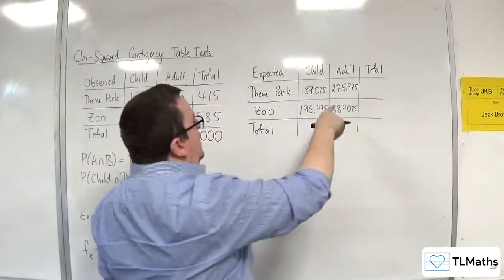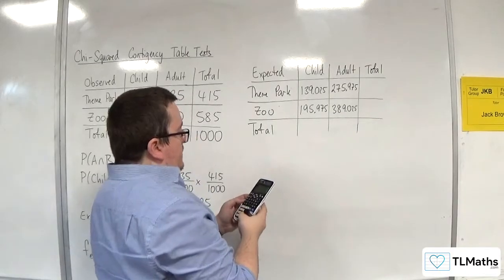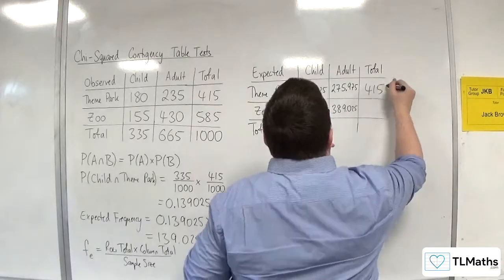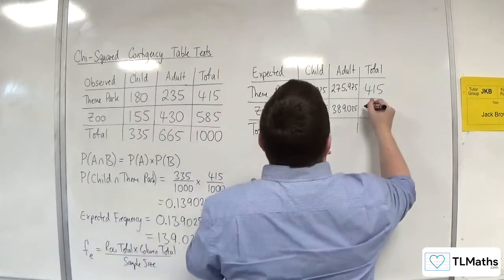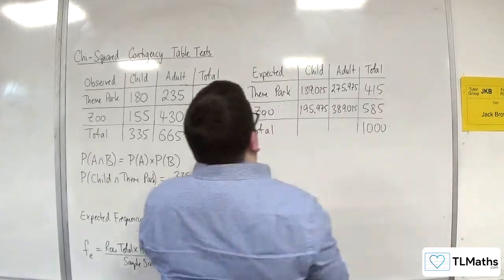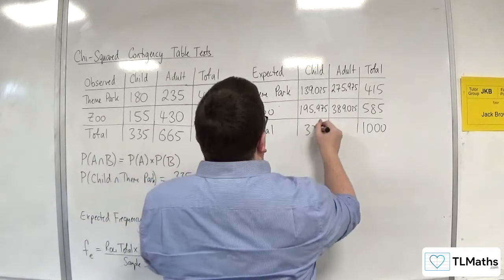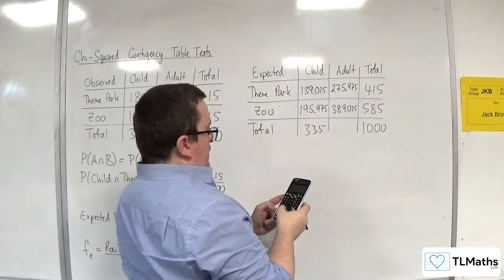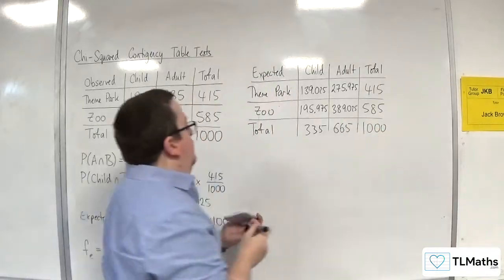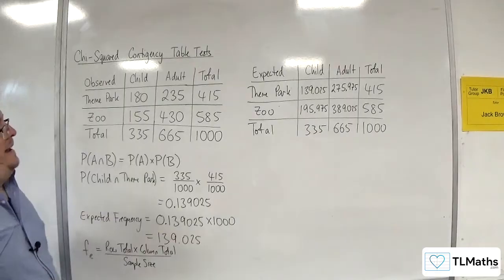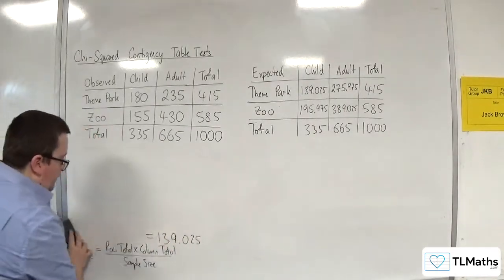Now what we're going to do is we're going to just total these up, because this is a nice little check, because these totals should be precisely the same as the totals that I got up here. So that's correct, 415. 195.975 plus 389.025, 585, good. So that's adding up to 1000, brilliant. 139.025 plus 195.975 is 335, all good. And the last one, 389.025, 665, all good. So that is how we can get our expected values. These are the expected values telling us what we would expect if they are independent.